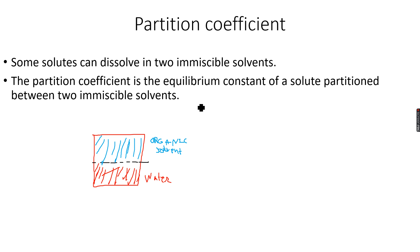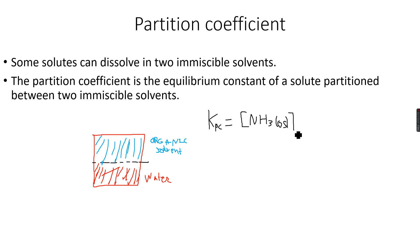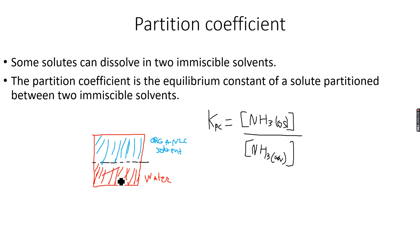So now I write KPC, which is the partition coefficient. It is equal to the concentration of NH₃ in the organic solvent (OS phase) over the concentration of NH₃ in the aqueous phase. The concentration of ammonia in the organic solvent divided by the concentration of ammonia in water gives the partition coefficient.